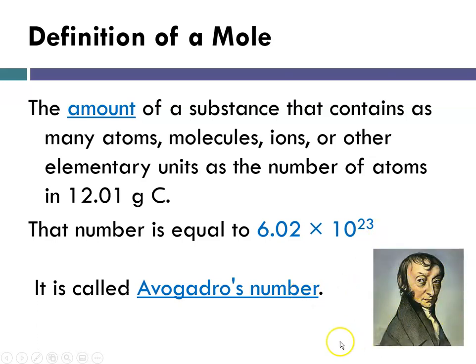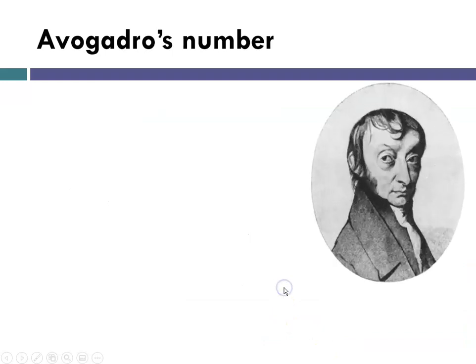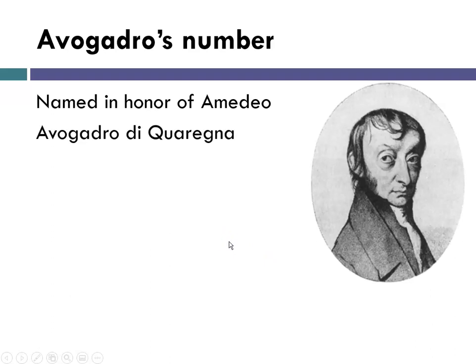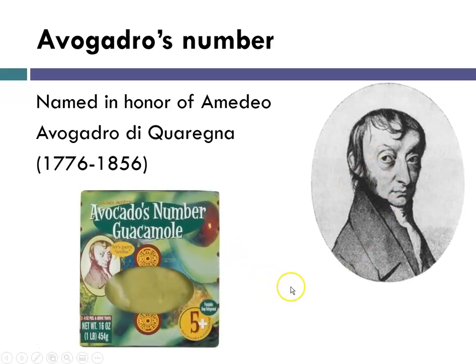And it's named after this fellow. So Avogadro's number is named in honor of Amadeo Avogadro de Quaregna, who lived from 1776 to 1856. And I'm just going to show you a picture here of Trader Joe's guacamole. And if you've ever gone to Trader Joe's and bought their guacamole, it's called Avogadro's number guacamole. And I'm going to point out that on the packages of guacamole at Trader Joe's, look at that picture. It's the same one.